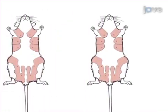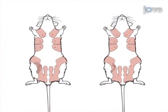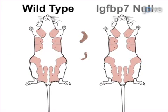To do this, mammary glands are excised from mice three days after the onset of lactation in wild-type and insulin-like growth factor binding protein 7, IGF-BP7, null mice. The glands are then processed and embedded in paraffin blocks for sectioning.